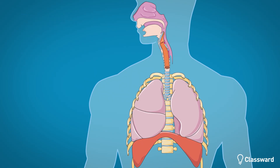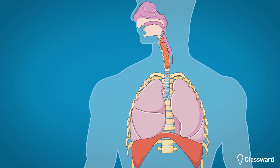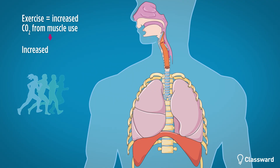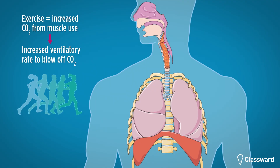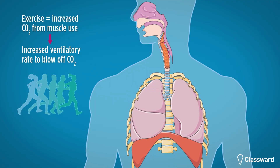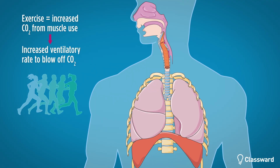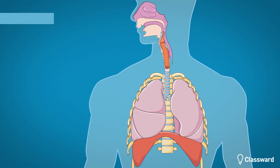The body is able to regulate its ventilatory rate as a normal response to an increase or decrease of carbon dioxide in the body. For example, during exercise the body breathes faster to eliminate excess CO2 built up by the increased muscle use.